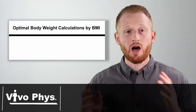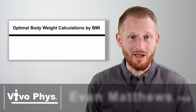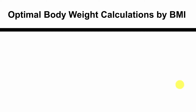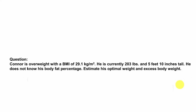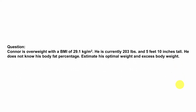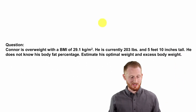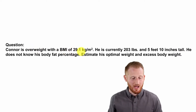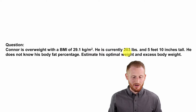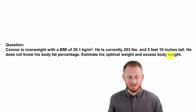Let's show how to calculate optimum body weight using BMI, or body mass index. In order to frame exactly when we would do this, let's use a question: Connor is overweight with a BMI of 29.1 kilograms per meter squared. He is currently 203 pounds and 5 feet 10 inches tall.